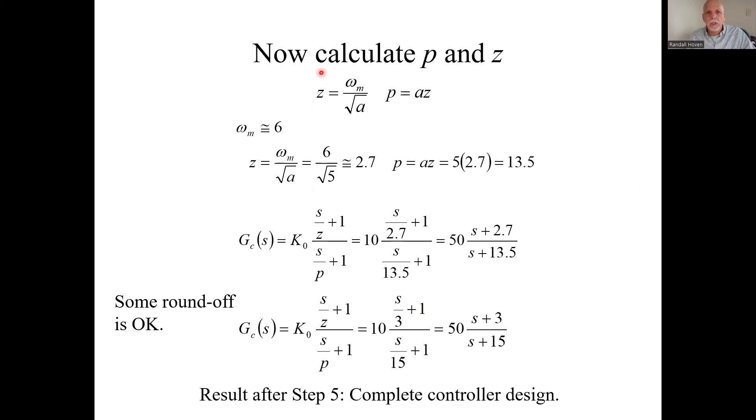But now that we have that, we can use more formulas. Here's a formula for the z. Here's a formula for the p. We now have the omega sub m, we have the a. Crank it out and you get numbers.